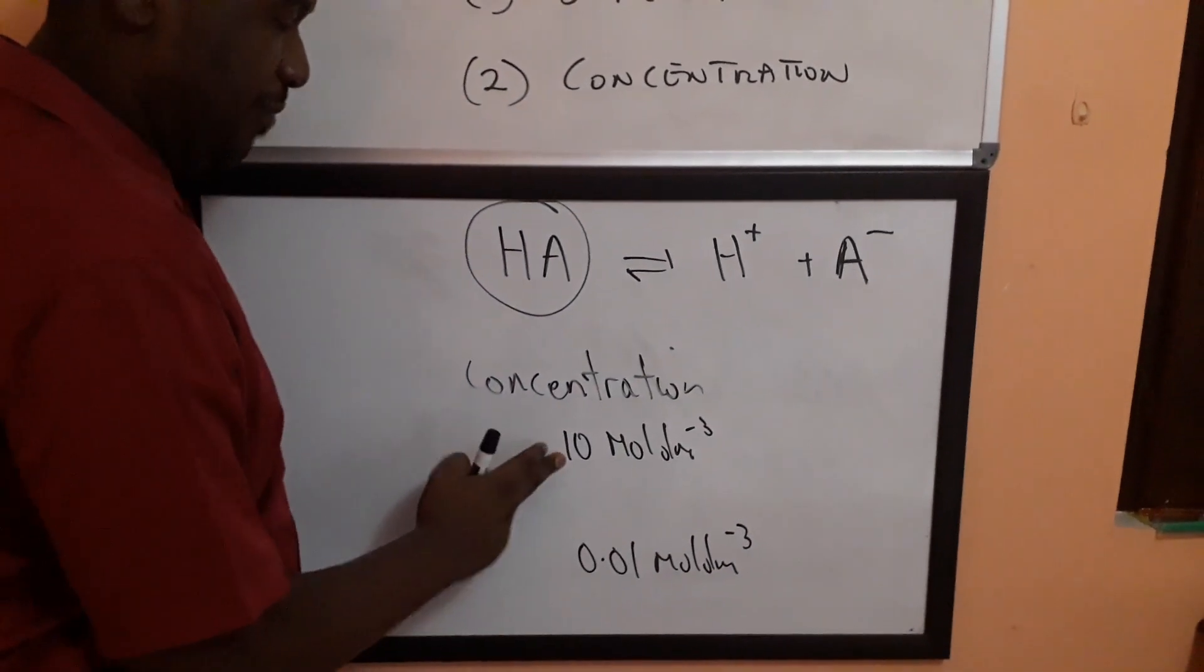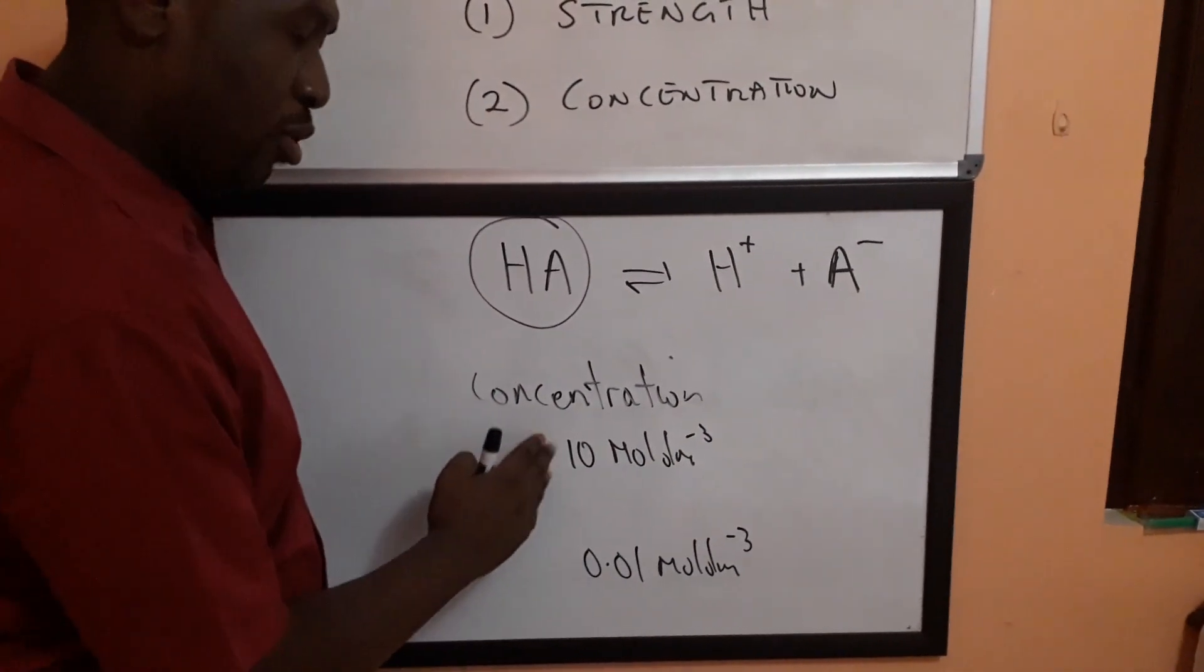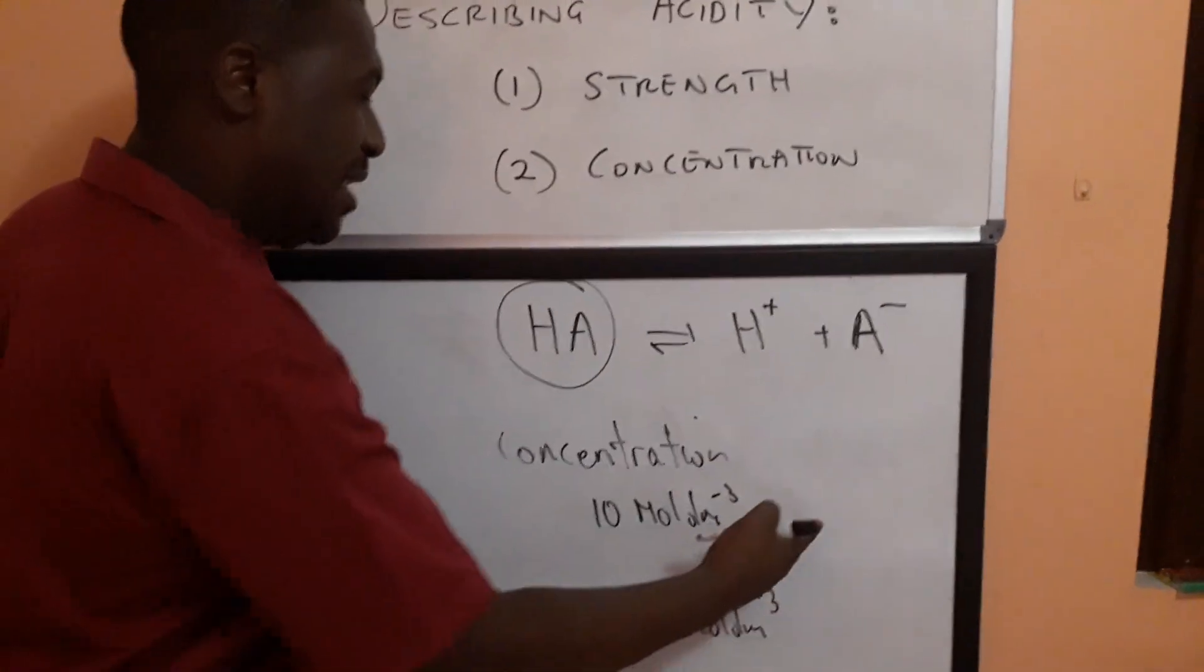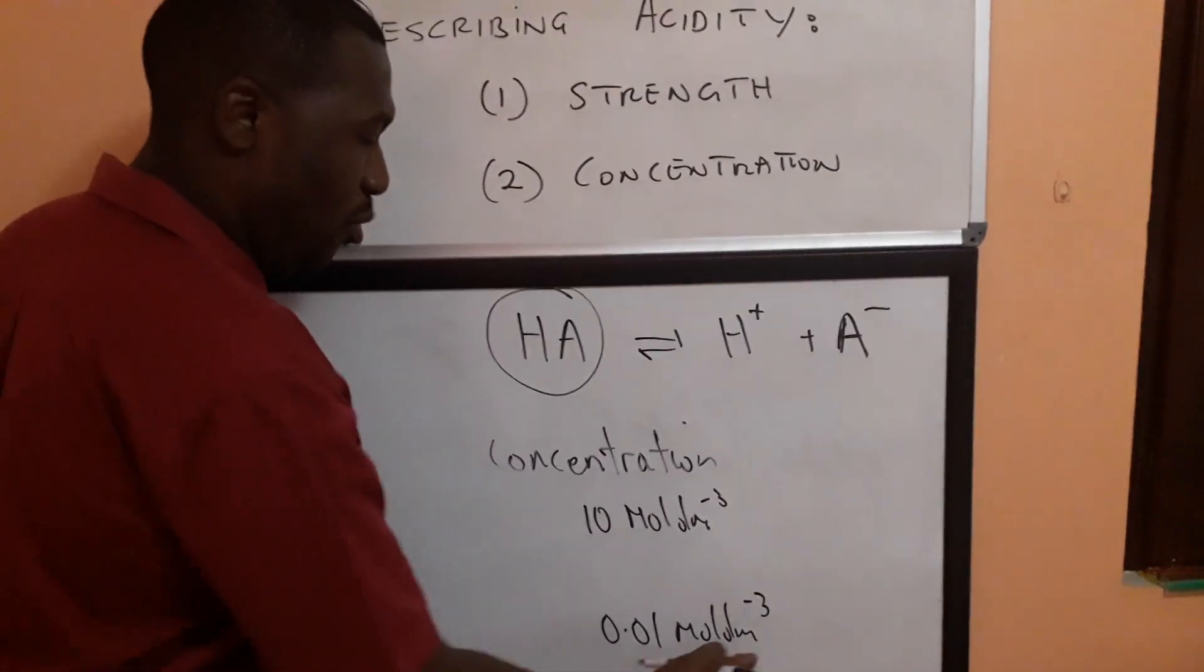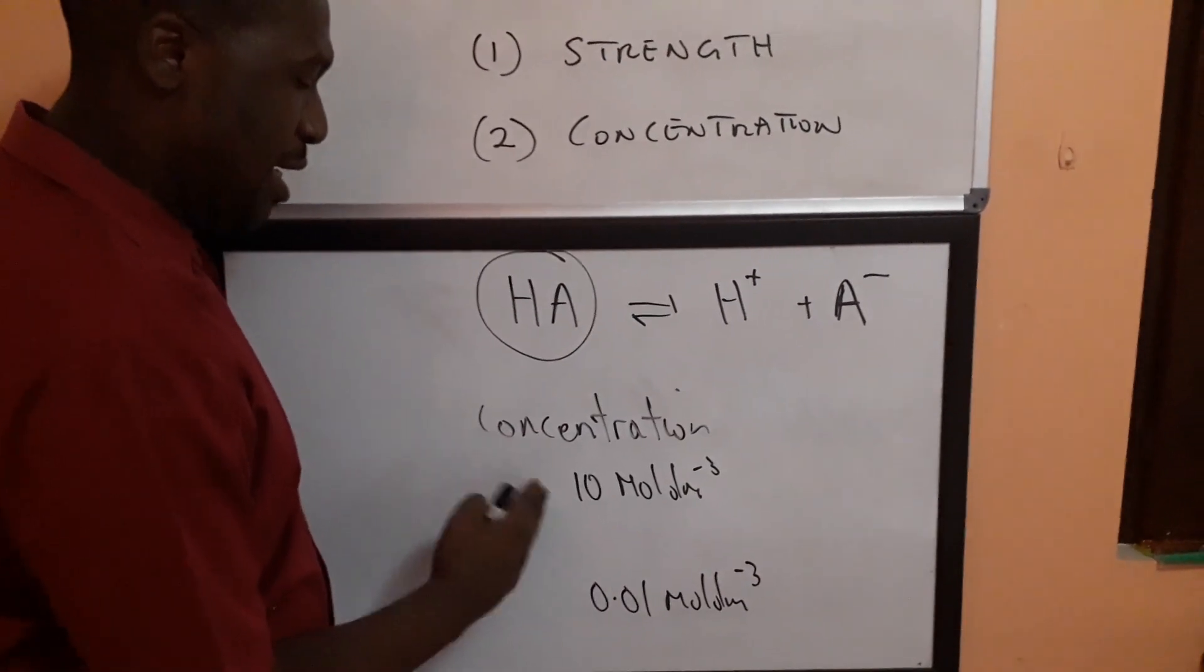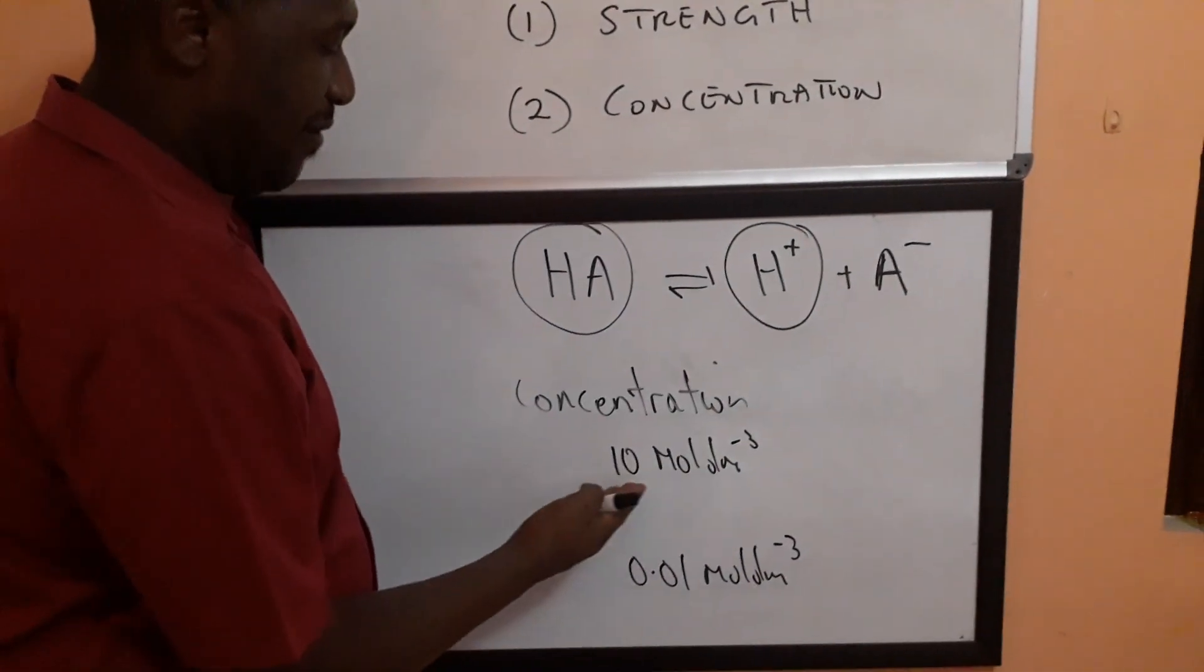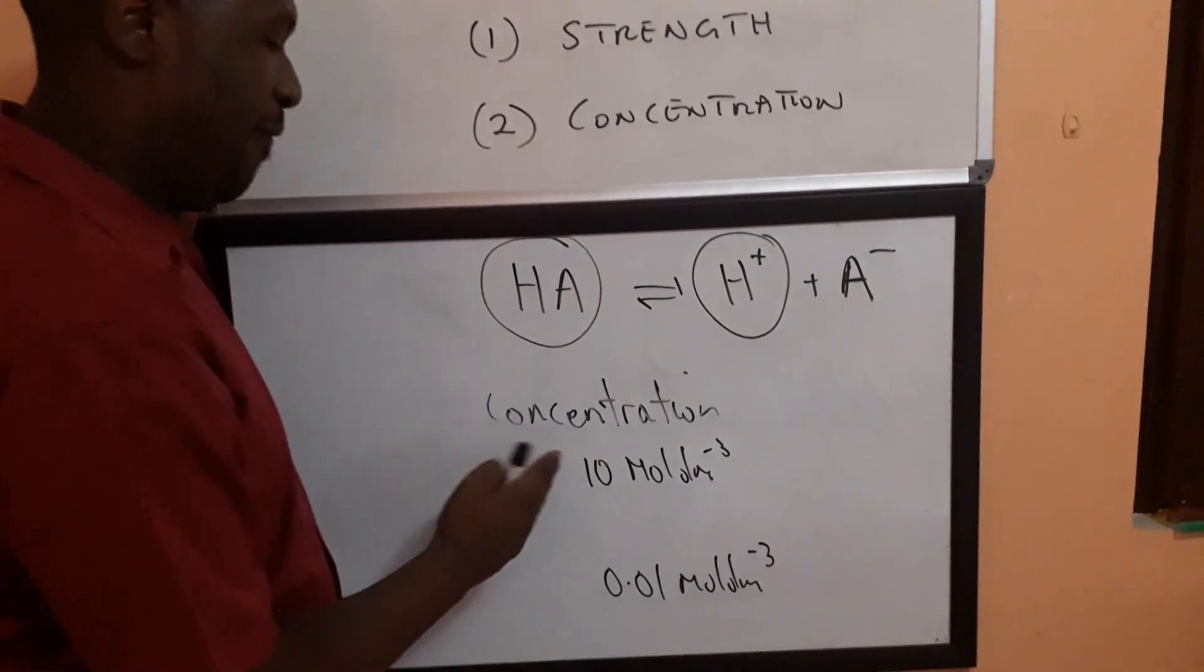Now obviously the 10 molar acid solution would be more active, more reactive than the 0.01 mole per dm cube. So if I have 10 molar HCl and I react it with a metal the reaction will be much more vigorous than if I used 0.01 mole per dm cube. So obviously if the acid is more concentrated it's more active but when you think about the acid what's the active ingredient? It is the H plus. So if you have a more concentrated solution you're going to have more H plus ions and hence a more vigorous reaction.